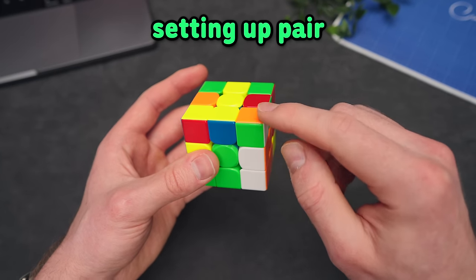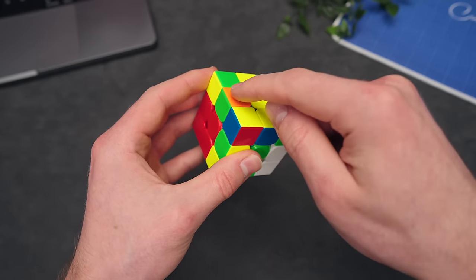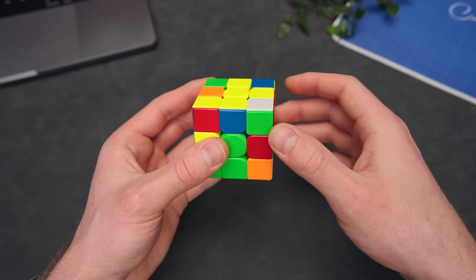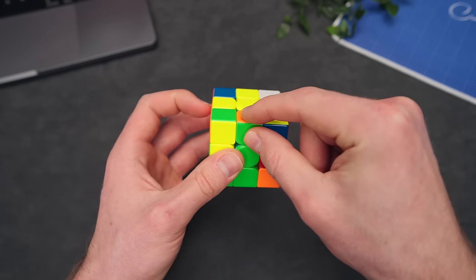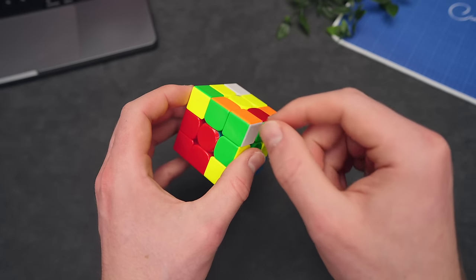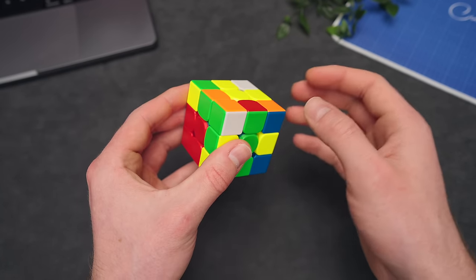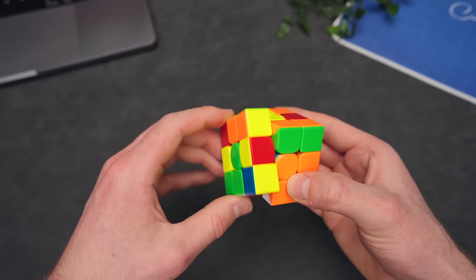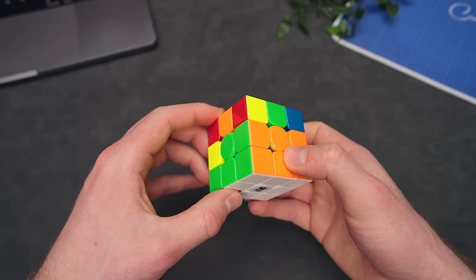So doing that again, but putting the edge right here, if I now do R U R prime, we actually put the pair into the top layer right away. If you can notice stuff like this yourself, that's really impressive and that can really help you shave off some seconds from your solving time.